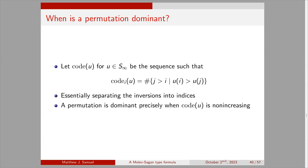We need to know when a permutation is dominant. For a permutation u in S_infinity, we define its code: code_i(u) is the number of j greater than i such that u_i is greater than u_j. So we're taking the inversions, separating them into the indices where they occur, and counting them. A permutation is dominant precisely when code(u) is non-increasing — i.e., code(u) is a partition.